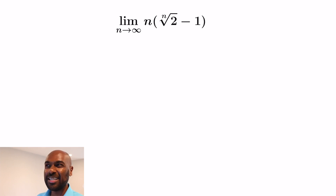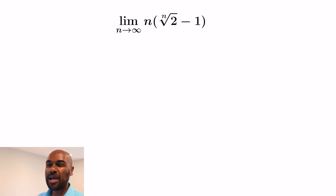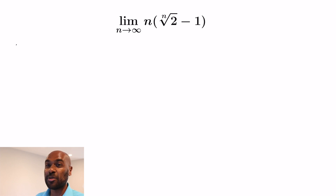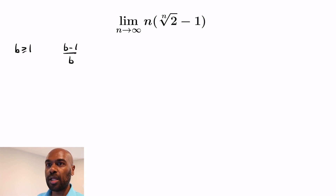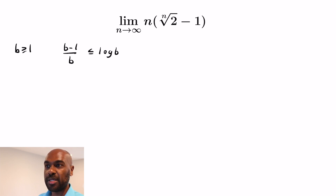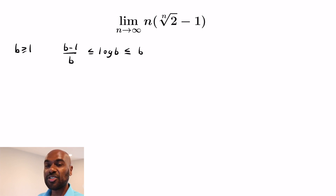So a very cool technique for establishing that limit. The next limit I want to look at is the limit as n goes to infinity of n times the quantity (the nth root of 2 minus 1). This is going to involve an interesting inequality. For b greater than or equal to 1, we're going to exploit the fact that (b-1)/b ≤ log b ≤ b-1.